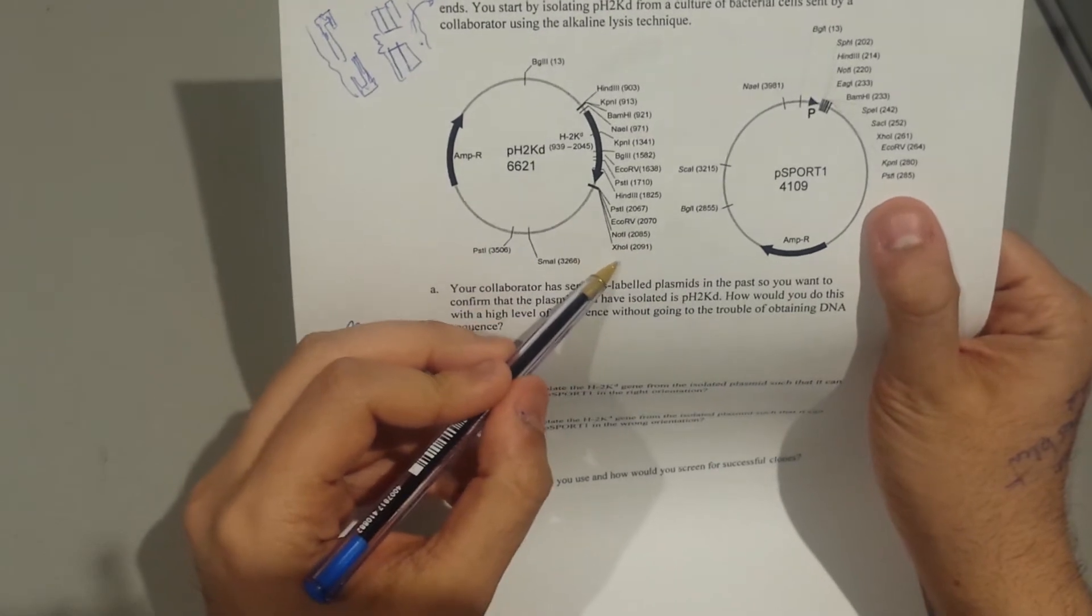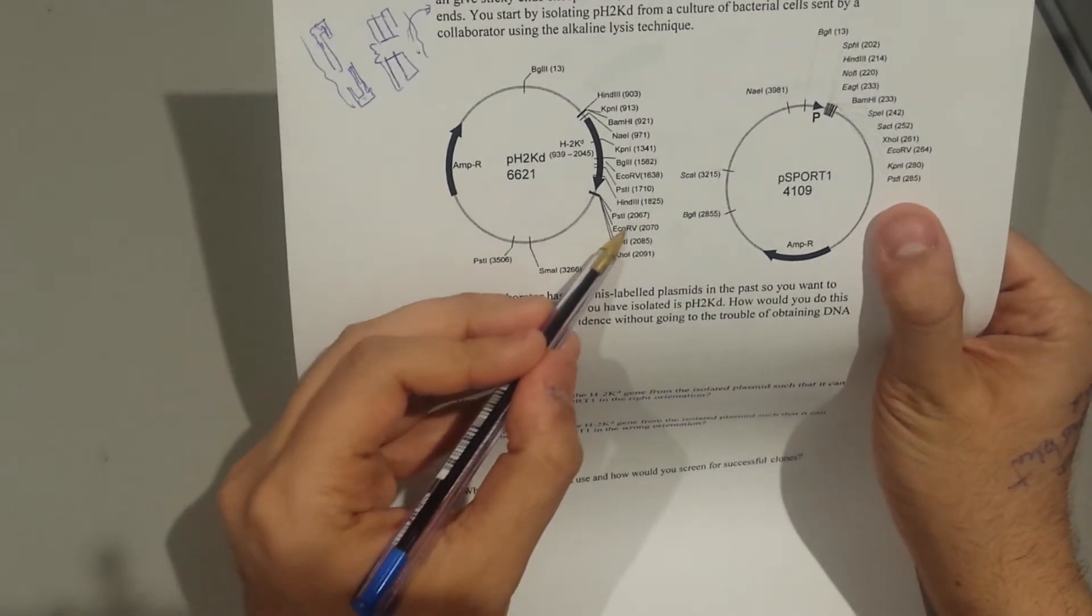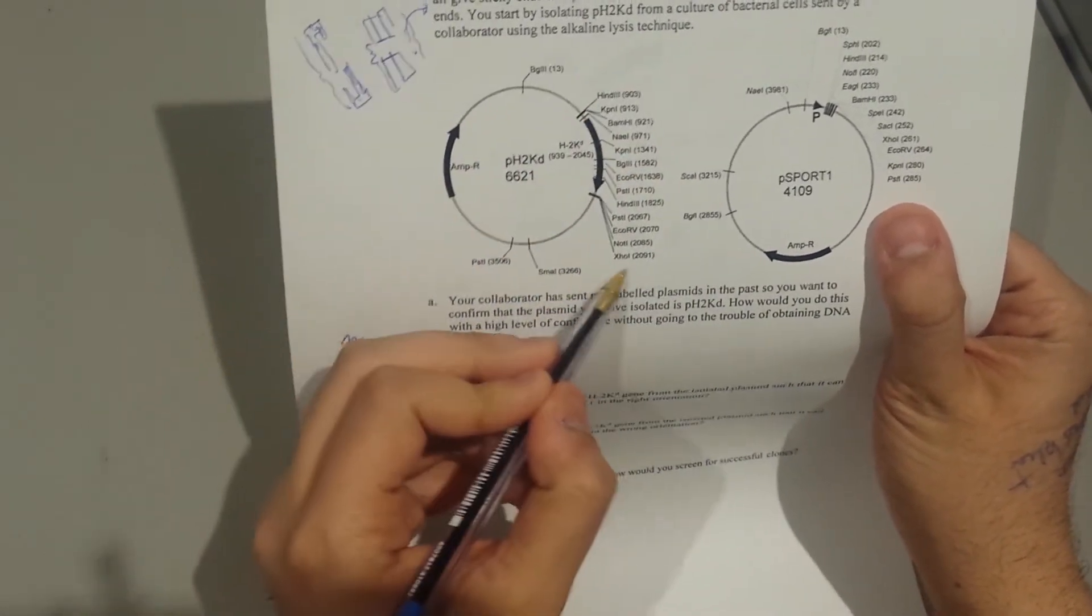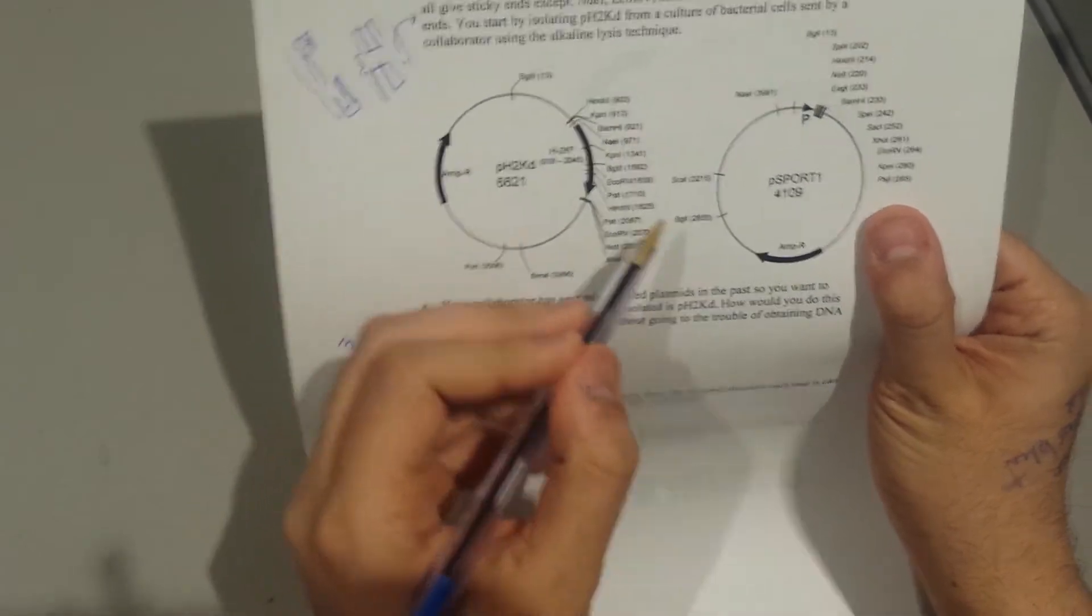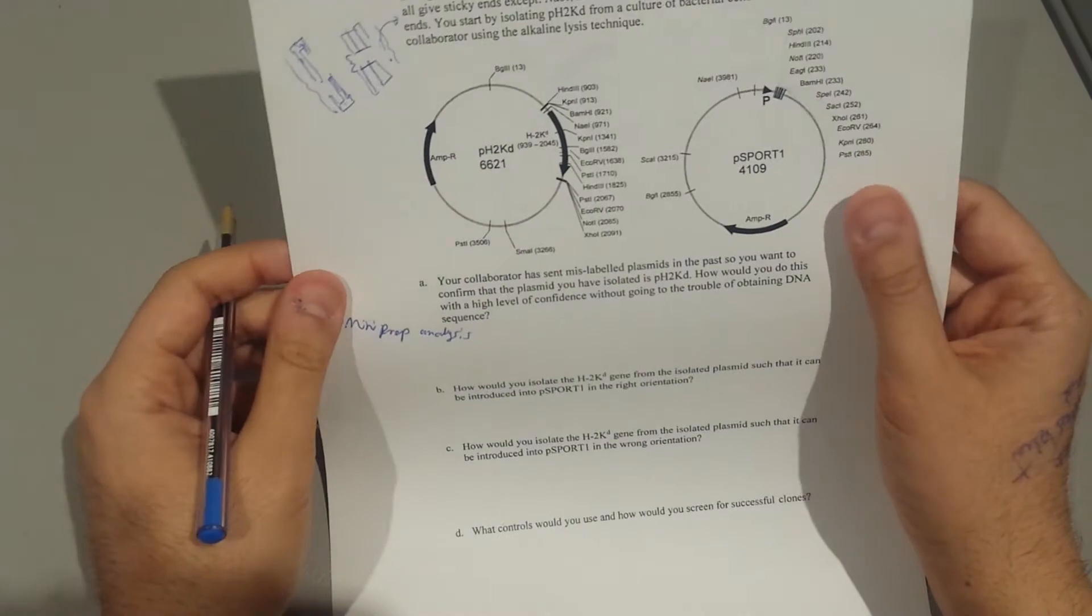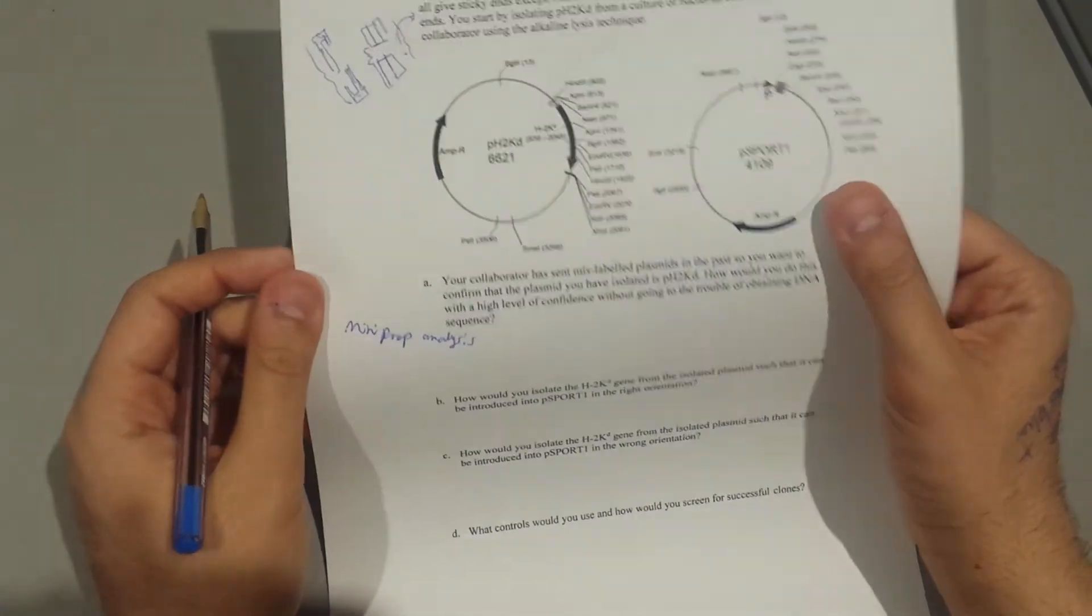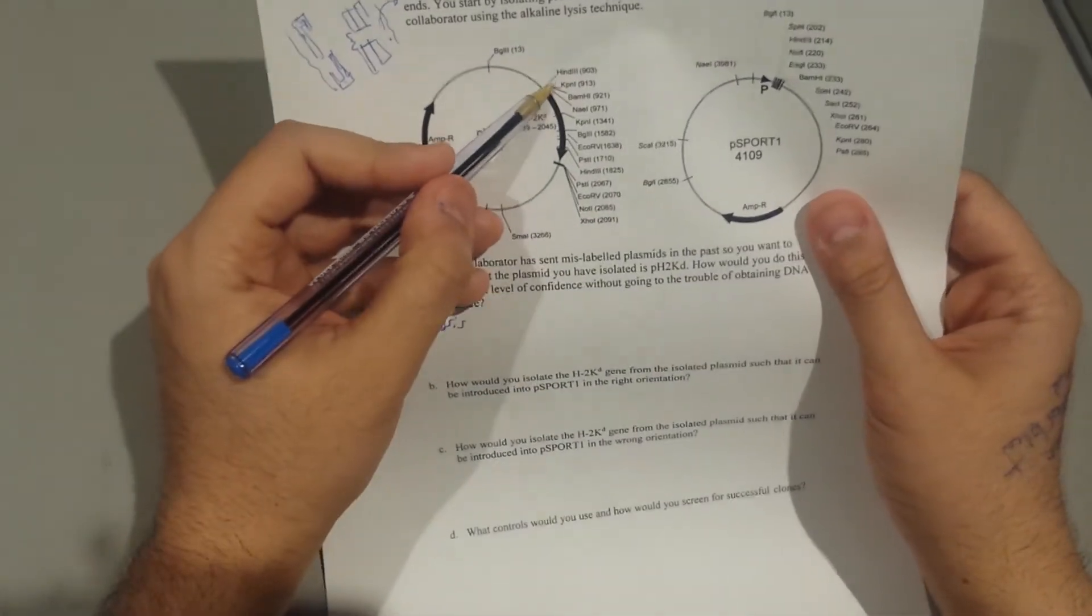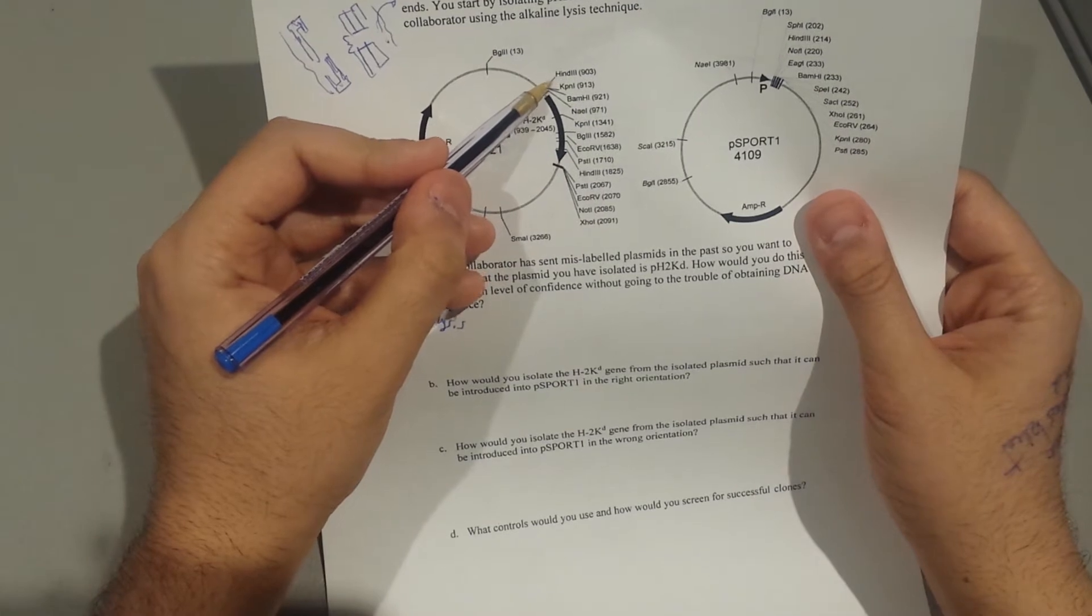If it's only one site, there is no second cut. If you just restriction endonuclease with this one, it gives you a single linear size, but you don't want that. So you want to find the enzymes that have two sites.